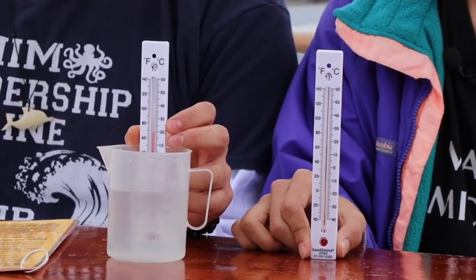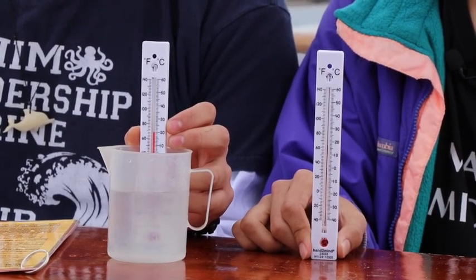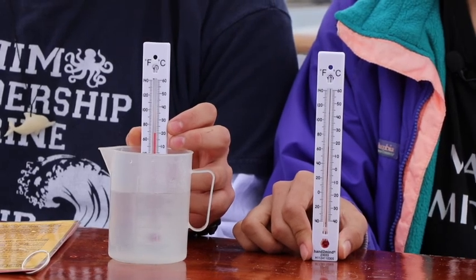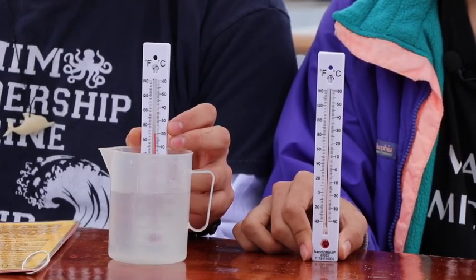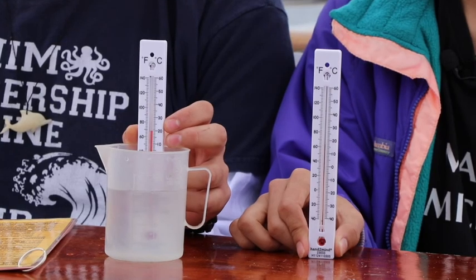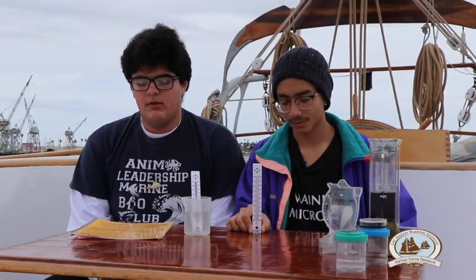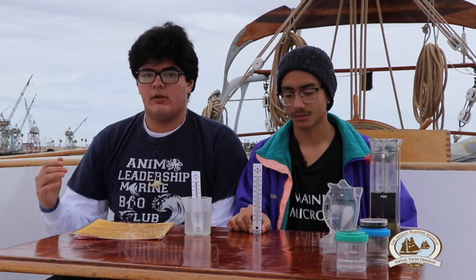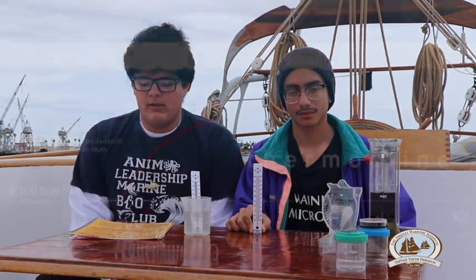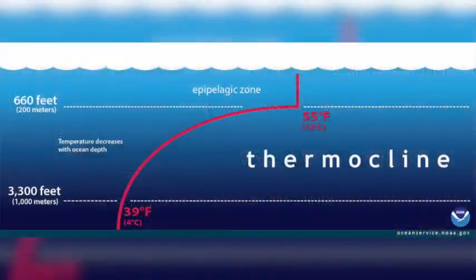Think about the last time you went swimming, whether in a lake, ocean, or pool — is the water at the surface warmer, or is it colder the deeper you go? Most of the time, the sun is heating the water on the surface, so the deeper you go, the colder the water gets. This is also due to something called the thermocline — the colder the water is, the denser it is, and therefore it sinks.